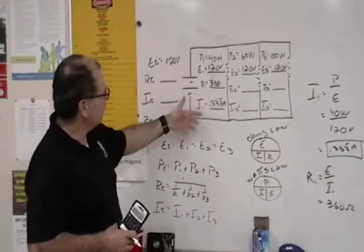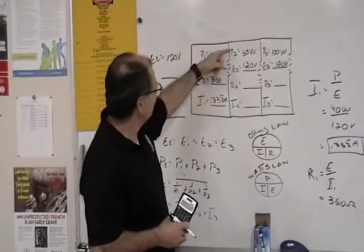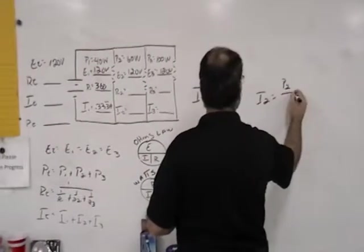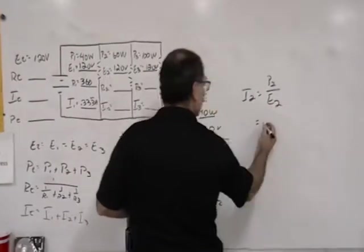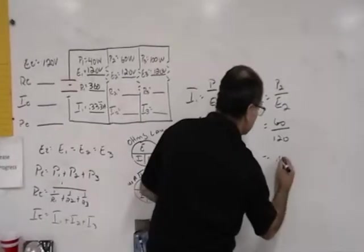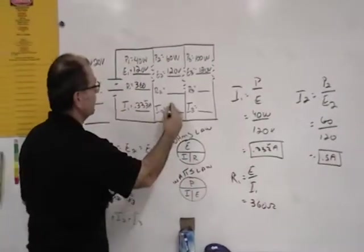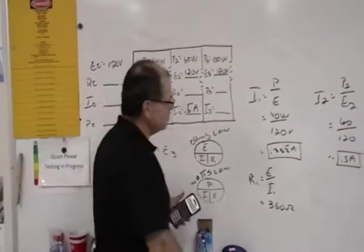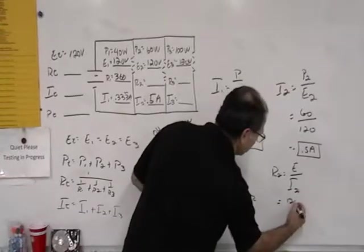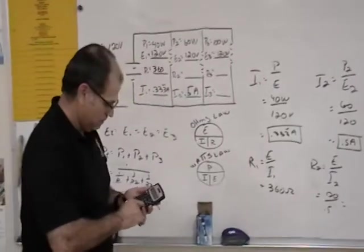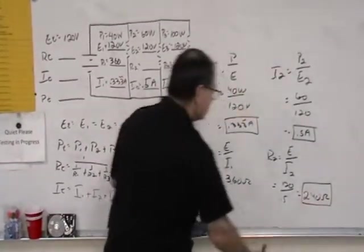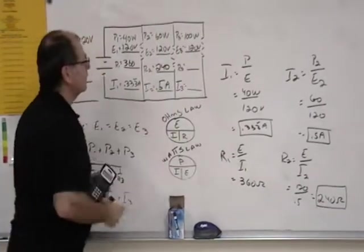We can do the same thing for the second branch. In this case, I have 60 watts divided by 120 volts. So I2 is equal to P2 divided by E2, so 60 divided by 120, 0.5 of an amp. And then R2 will be the total voltage divided by I2, so 120 divided by 0.5 gives me 240 ohms for my resistance value at R2.